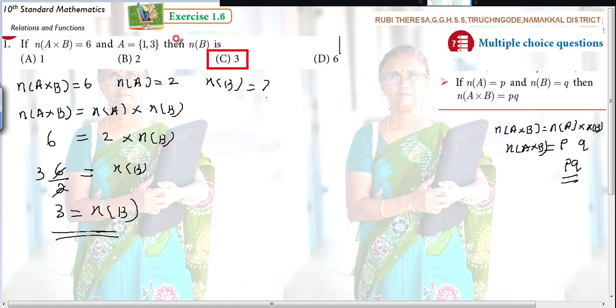Within a fraction of a second, you will be able to give the answer. Because here n(A) equals 2, and n(A × B) equals 6. That means what? 2 × 3 is 6. Otherwise, 6 ÷ 2 is 3. So no need to do all these steps.